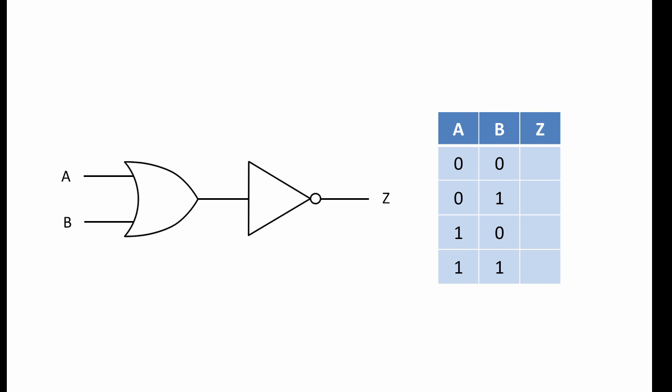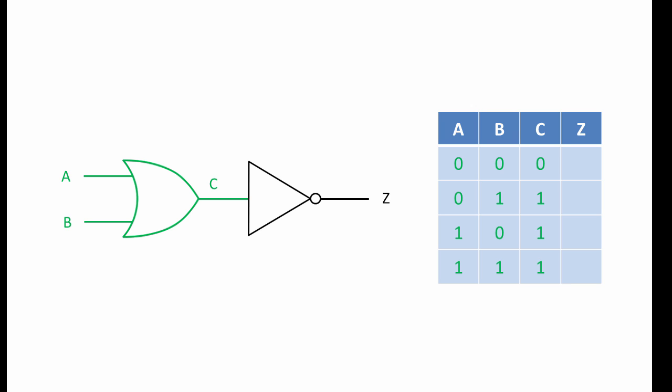Here is a combination of gates. The overall combination has two inputs and one output, but there are two gates involved. To come up with a truth table for this combination of gates, it is useful to consider point C. Each value of C is the result of passing A and B through an OR gate. You can see when one or the other of A and B, or both, are a 1, the value at C is a 1. Then to get the value of Z, we pass each value of C through a NOT gate. You can see that each value of Z is simply the inverse of C.